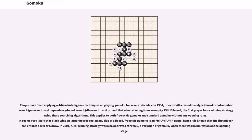People have been applying artificial intelligence techniques on playing Gomoku for several decades. In 1994, L. Victor Alice raised the algorithm of proof number search (PN search) and dependency-based search (DB search), and proved that when starting from an empty 15x15 board, the first player has a winning strategy using these searching algorithms. This applies to both freestyle Gomoku and standard Gomoku without any opening rules.